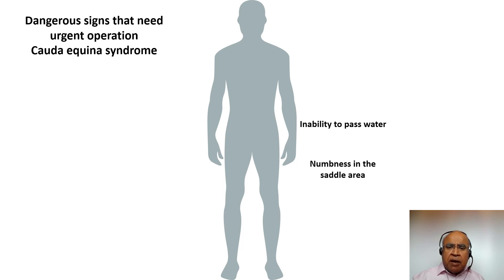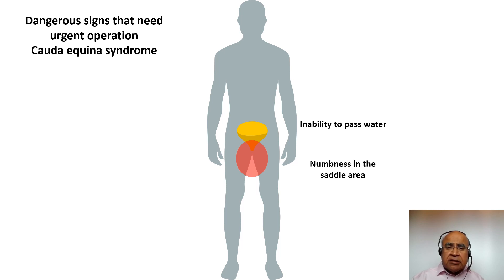However, some prolapses are large and cause cauda equina syndrome. This is an urgent condition requiring immediate medical treatment. In this condition, the patient may not be able to pass water, and there is numbness in the saddle area or around the front and back passage. If you have numbness around your external genitalia or cannot feel when you wipe, you need to seek urgent medical advice. You need to identify difficulty passing water rather than waiting for incontinence.